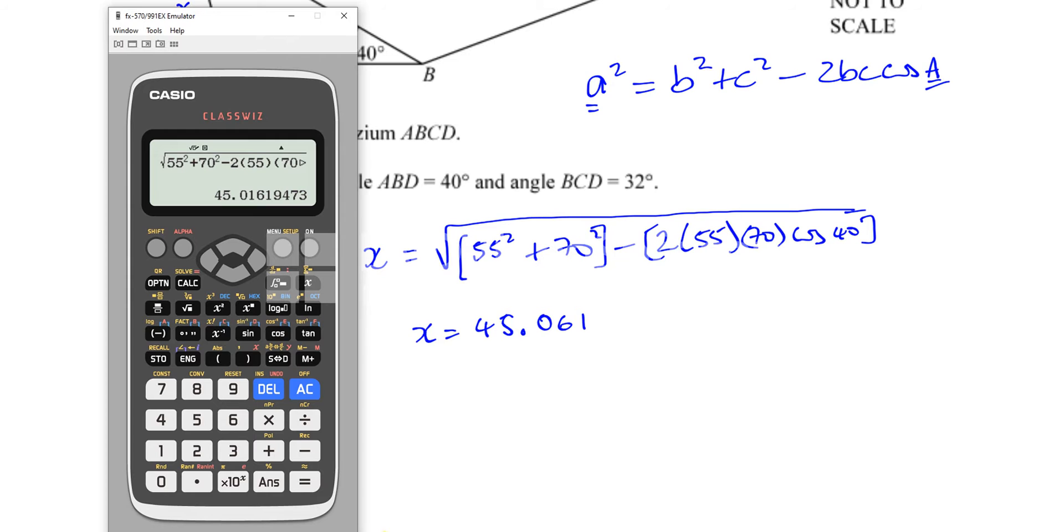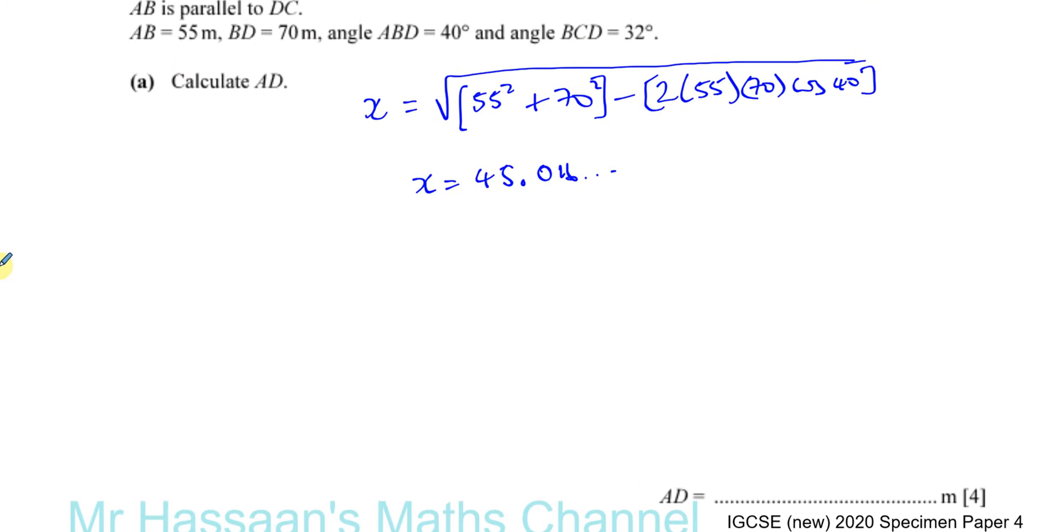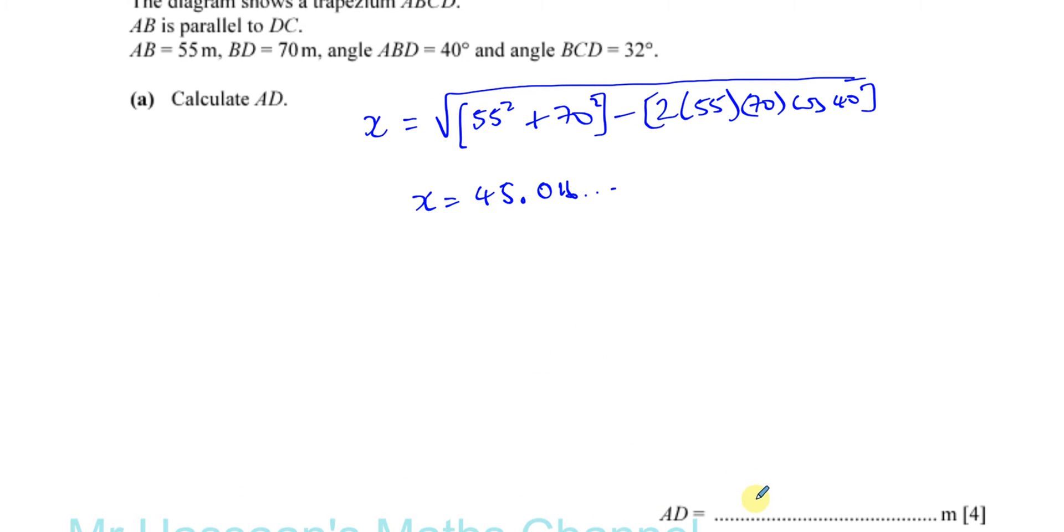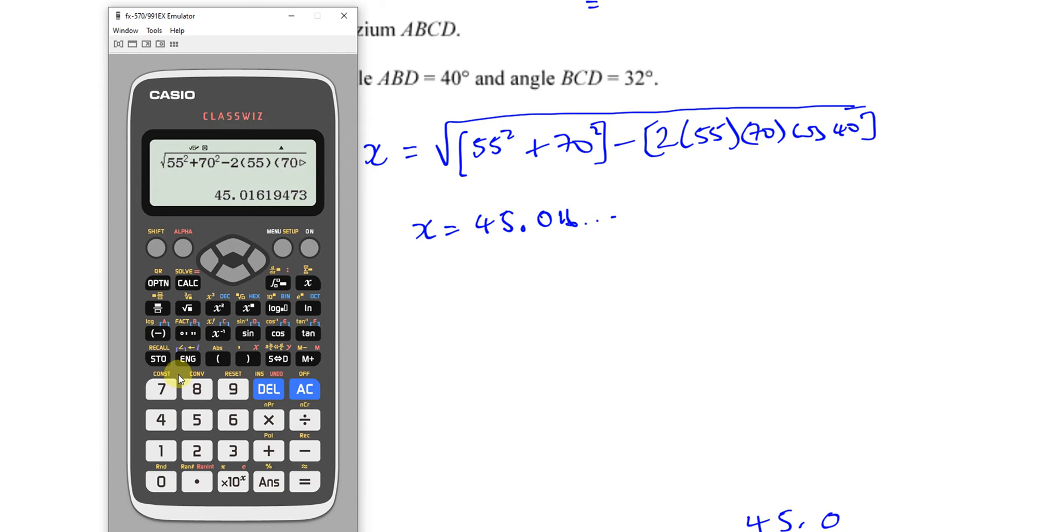So x equals 45.016 and it continues on like that. Now they didn't tell us how to round the answer, so we need to round to three significant figures. So you should write 45.0 and the meters is already there for us. Now what I'm going to do in case I need to use that length again, I'm going to store it. So I'll press this button here, store as A. So I've stored the answer under this A. So that's stored in the memory.